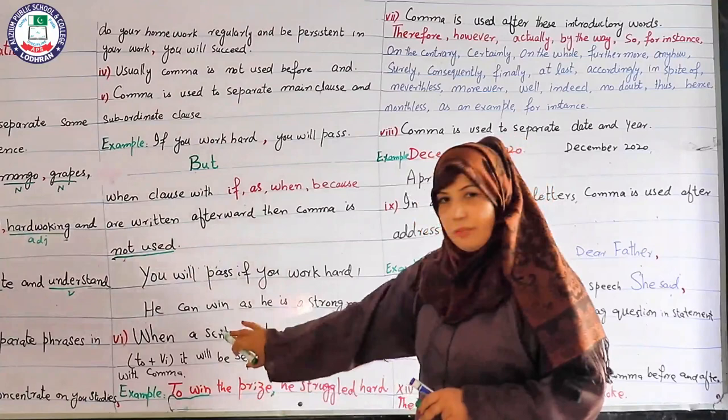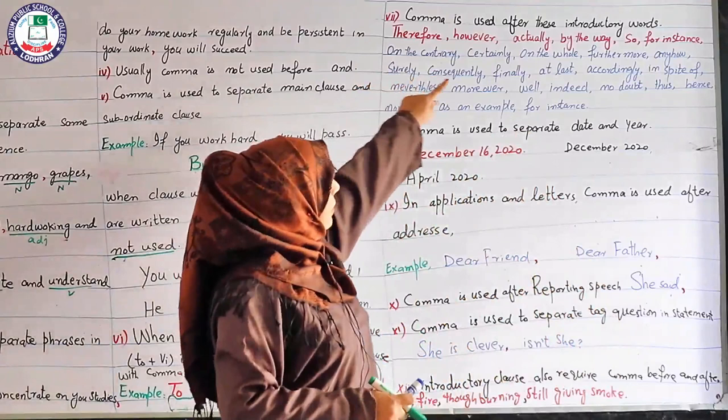This is rule number six. Now let us move to the next step — rule number seven: comma is used after these introductory words.